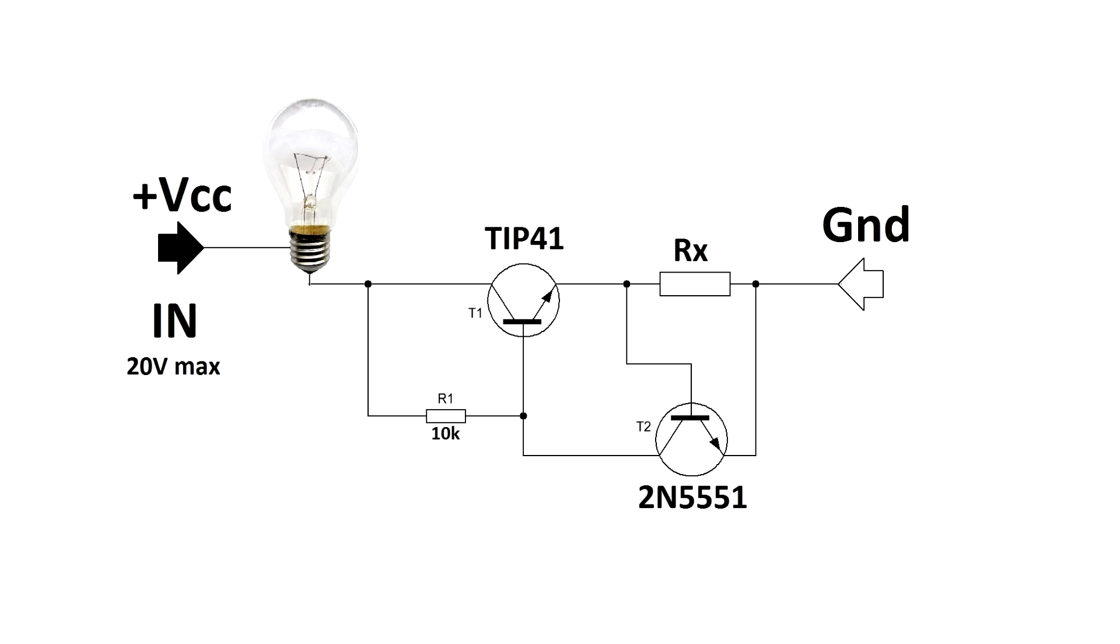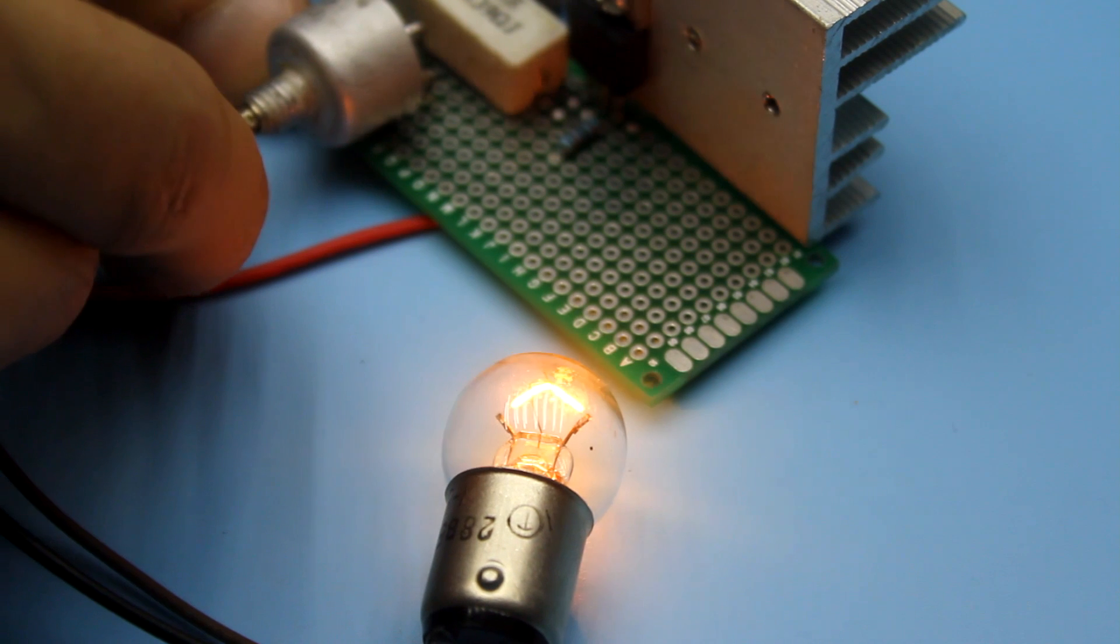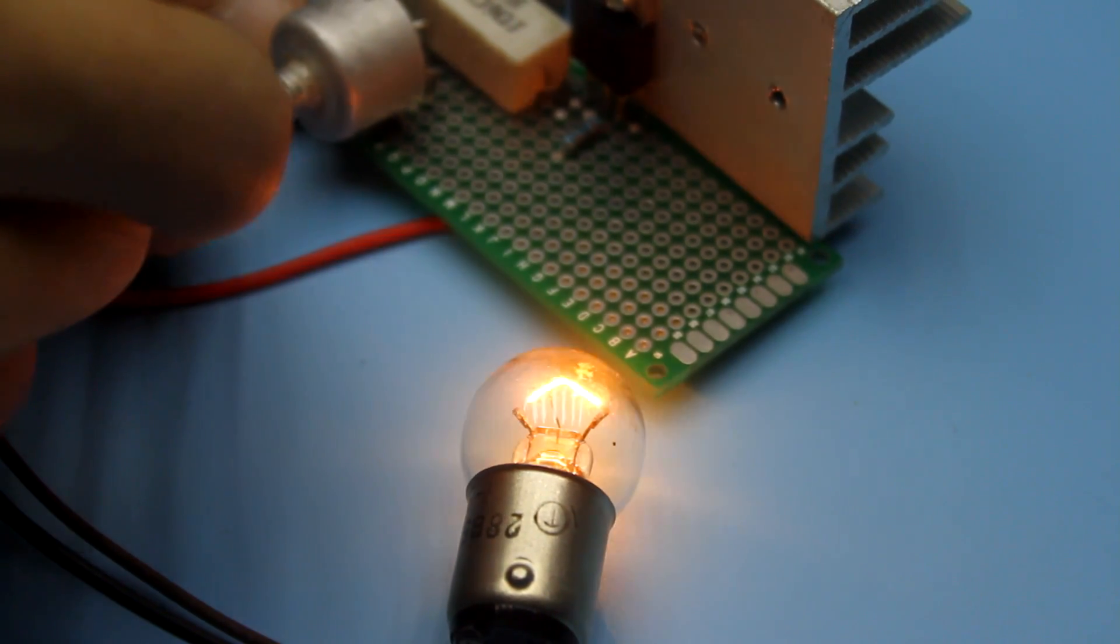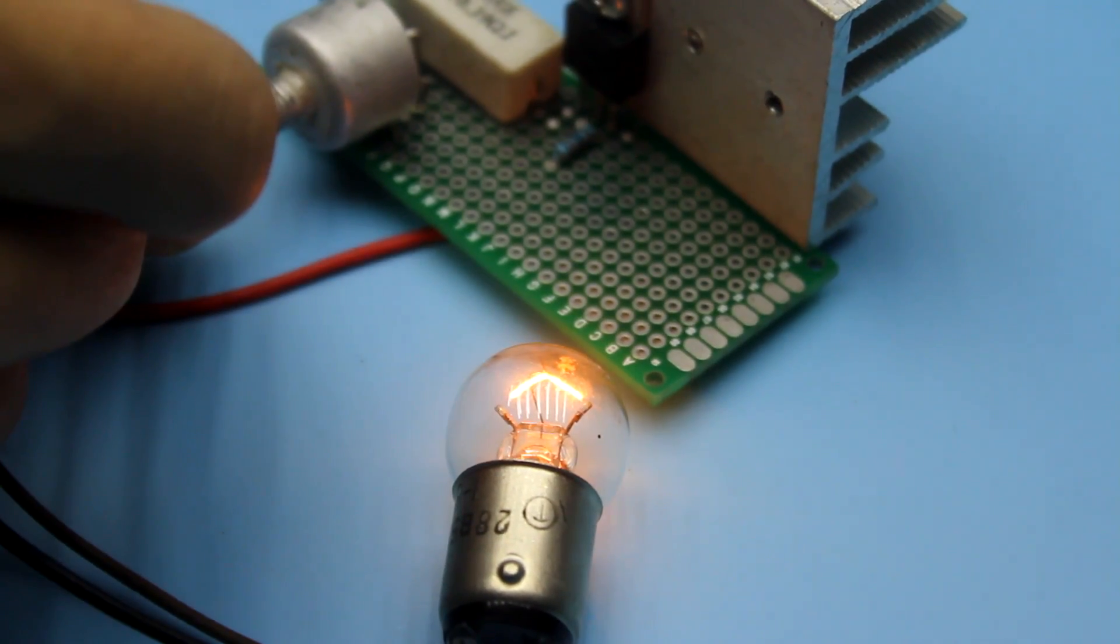Let's begin. The first circuit is characterized by maximum simplicity and availability of components. There are only two transistors, one of them is the control transistor, the second is the power transistor, and the main current flows through it. A wire resistor with low value is used as the current sensor. When the output load is connected to this resistor, some voltage drop occurs. The more powerful the load is, the greater the fall will be.